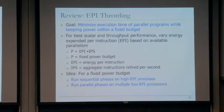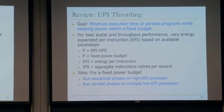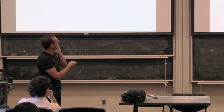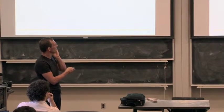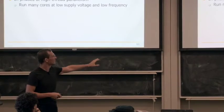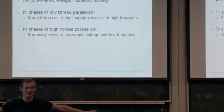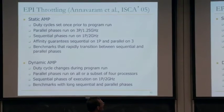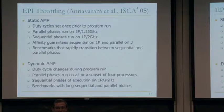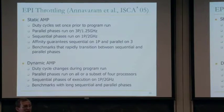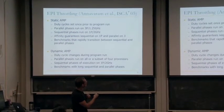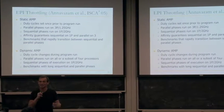One way of achieving this is using DVFS. When you have low thread parallelism, run a few cores at high supply voltage and high frequency. When you have high thread parallelism, run many cores at low supply voltage and low frequency. That's what this paper did — this is ISCA 2005, 'Mitigating Amdahl's Law via EPI Throttling.'